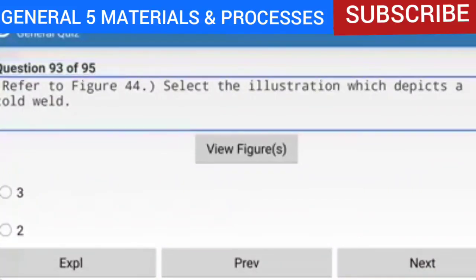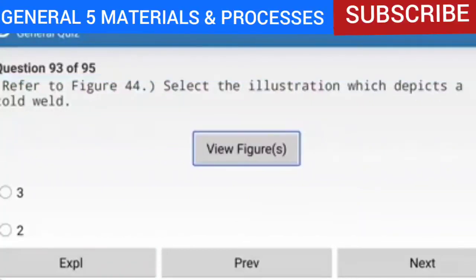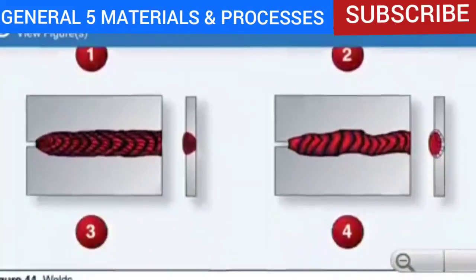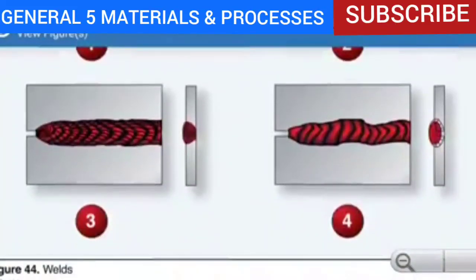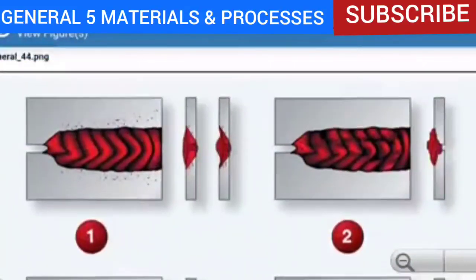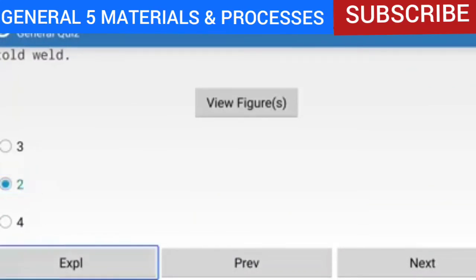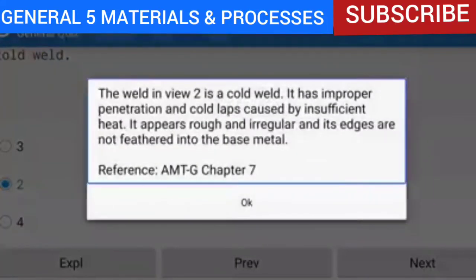Question 93 of 95: Refer to figure 44 — select the illustration which depicts a cold weld. The answer is view 2. The weld in view 2 is a cold weld. It has improper penetration and cold lapse caused by insufficient heat. It appears rough and irregular and its edges are not feathered into the base metal.